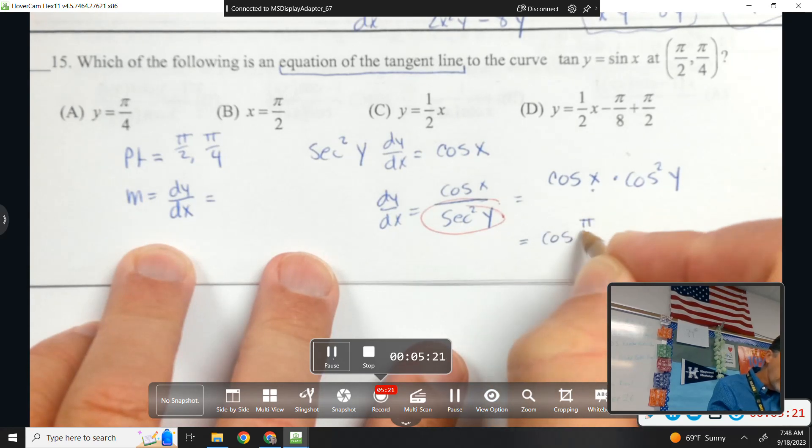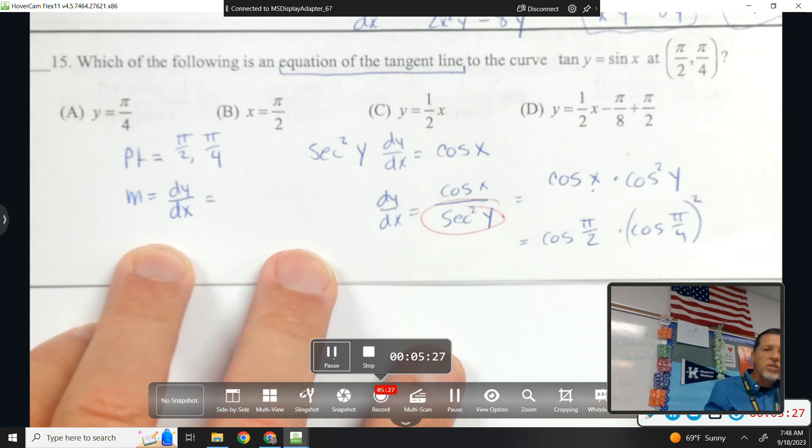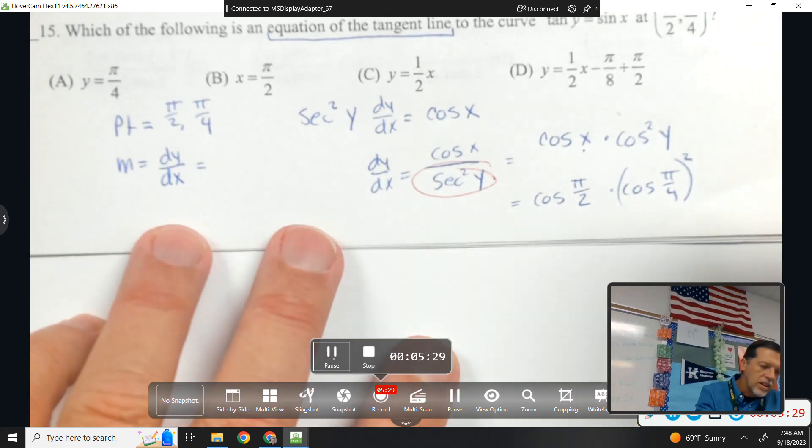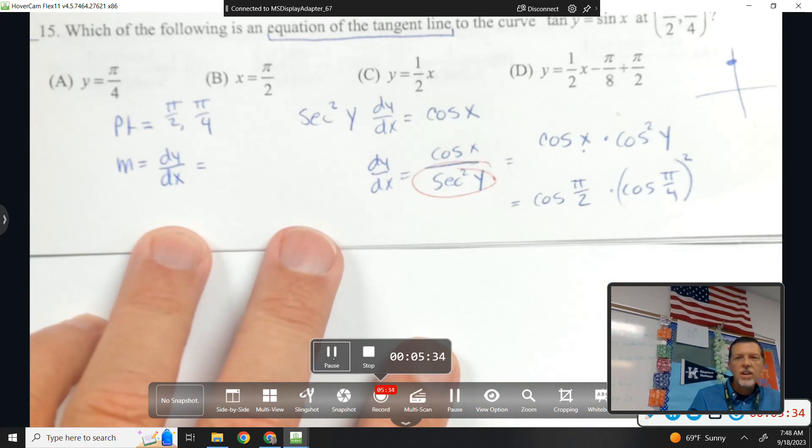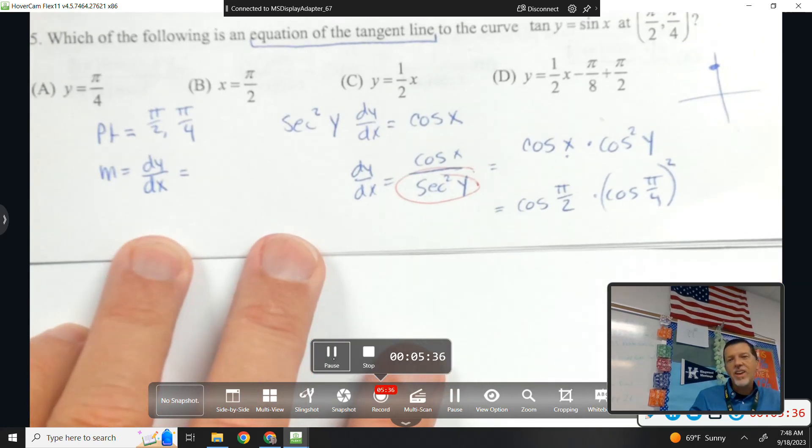So cosine pi over 2, cosine pi over 4 squared. Let's see. Pi over 2 is right there. Well this just got easier. Because what's the cosine of pi over 2?